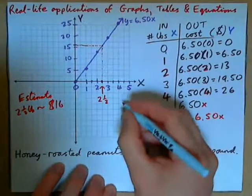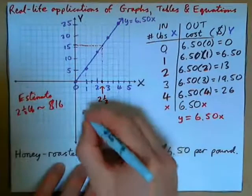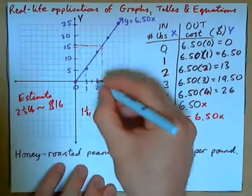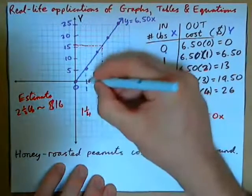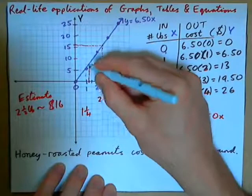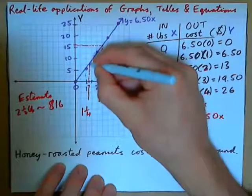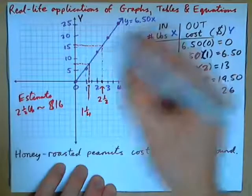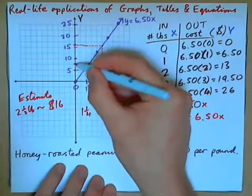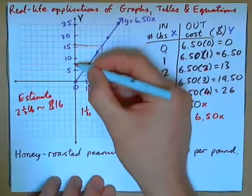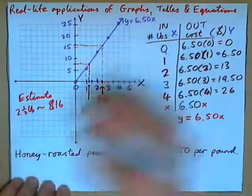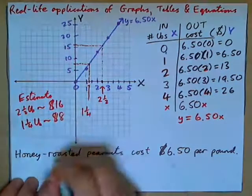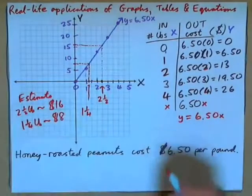How about 1 and 1 quarter pounds? 1 and 1 quarter is located about here between 1 and 2. Go vertically up, hit the graph, and go straight back. This is $5, this is $10, so this is about $8. So 1 and 1 quarter pounds costs about $8. That's how we do estimations.